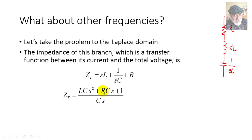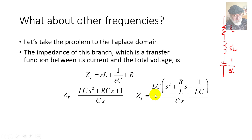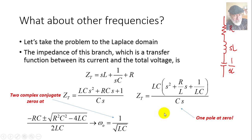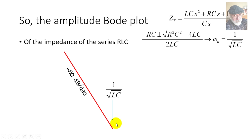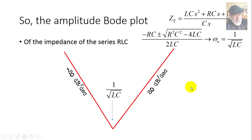Factoring out LC, that transfer function — the impedance of the branch — has one pole at zero and two complex conjugate zeros at ω = √(1/LC). The Bode plot therefore enters from the left with a slope of -20 dB/decade due to the pole at zero, and at the frequency 1/√(LC) the slope increases by 40 dB to +20 dB/decade. That is the amplitude Bode plot of the impedance of the series RLC circuit.